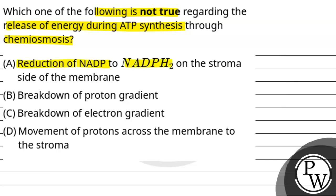First option is reduction of NADP to NADPH2 on the stroma side of the membrane, second breakdown of the proton gradient, third breakdown of the electron gradient, and fourth movement of protons across the membrane to the stroma.